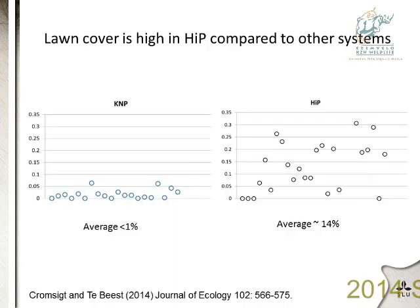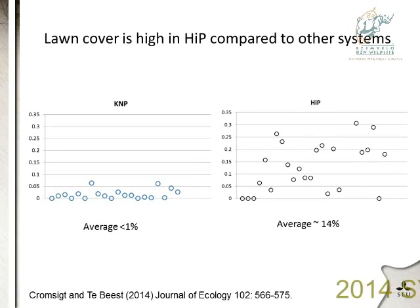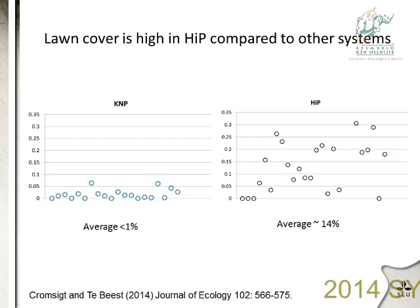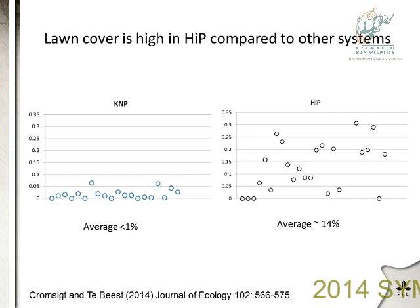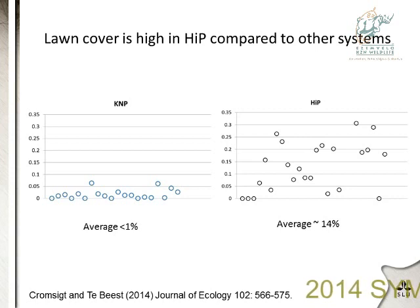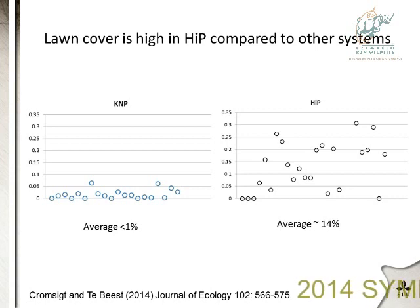HiP is quite unique, especially in terms of short grass to tall grass heterogeneity. I've done work in Kruger National Park and a lot more in HiP. Each point on this graph represents a transect of several kilometers, showing the proportion of grazing lawn on that transect. You can see HiP on the right has much higher covers of grazing lawn — ranging from 0 to 30-35% — while Kruger is mostly below 5 to 10%.